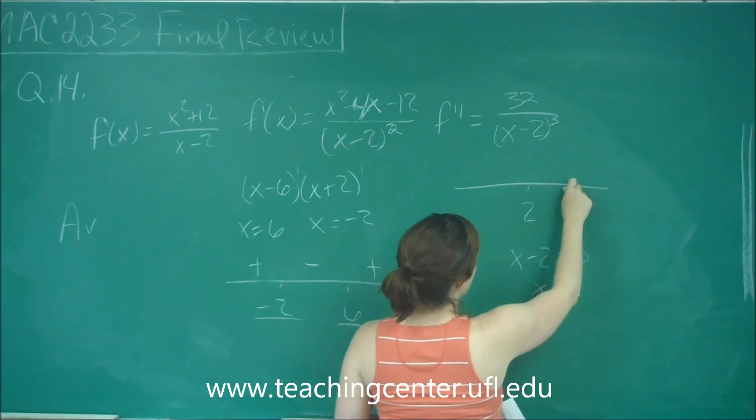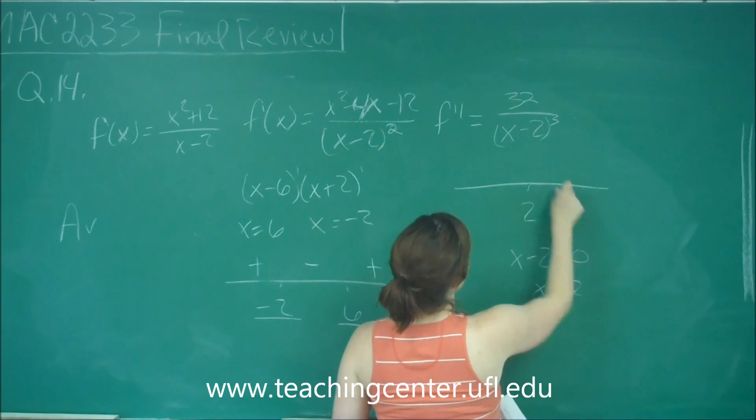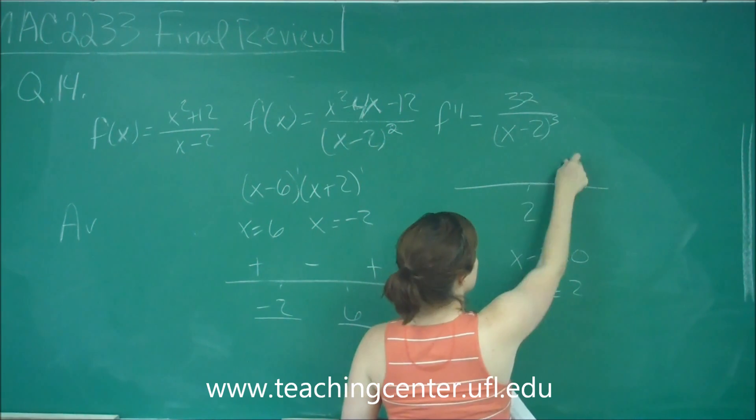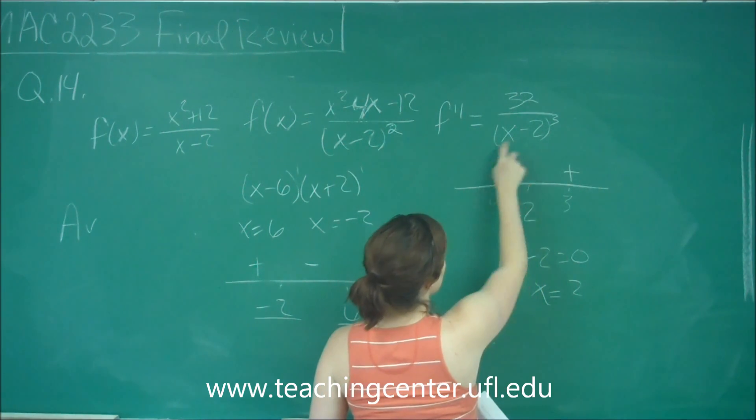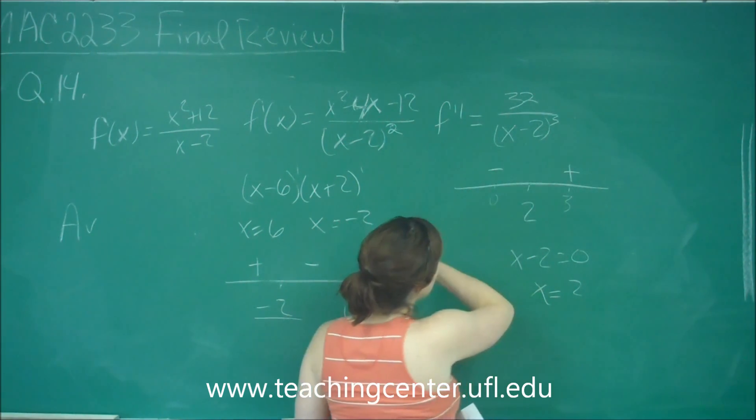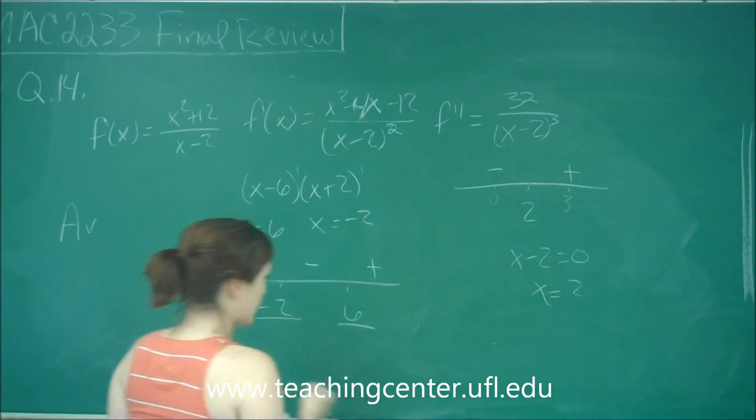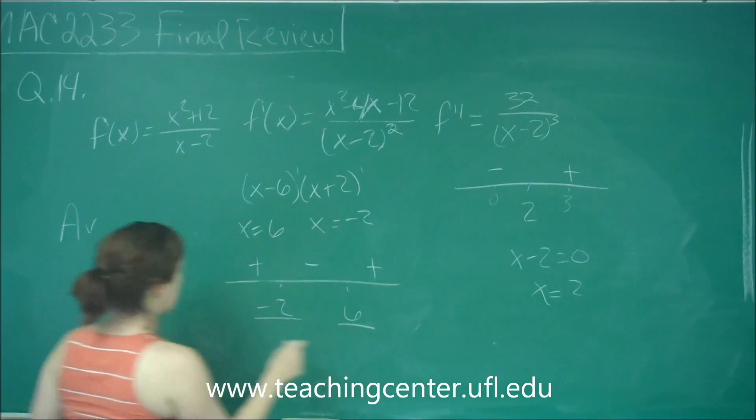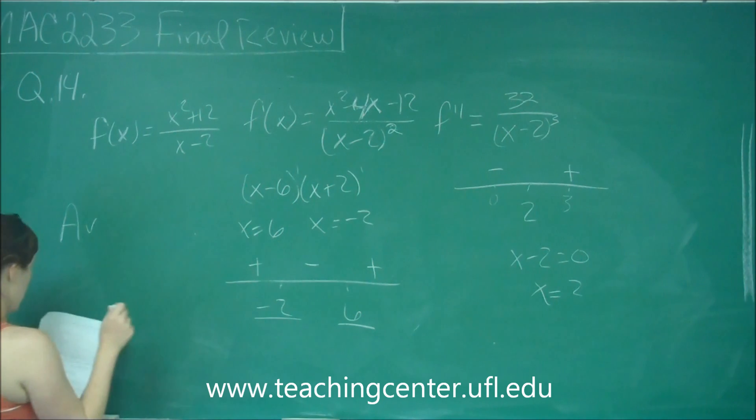If I plug in 3, I get 3 minus 2, which is 1 cubed, so that's positive. And if I plug in 0, I get negative. So at 6 to infinity, it is both increasing and concave up. So B is also okay.